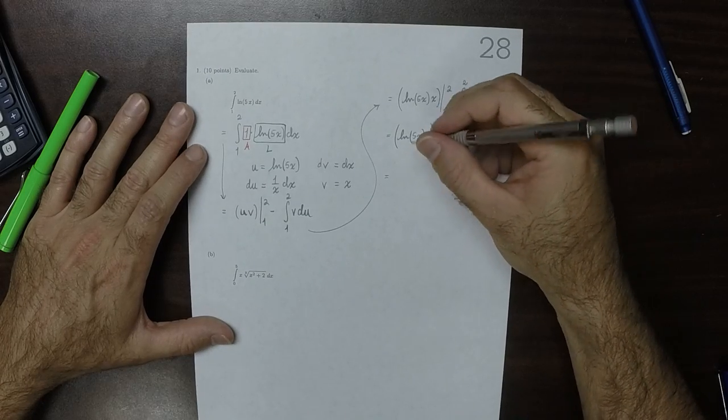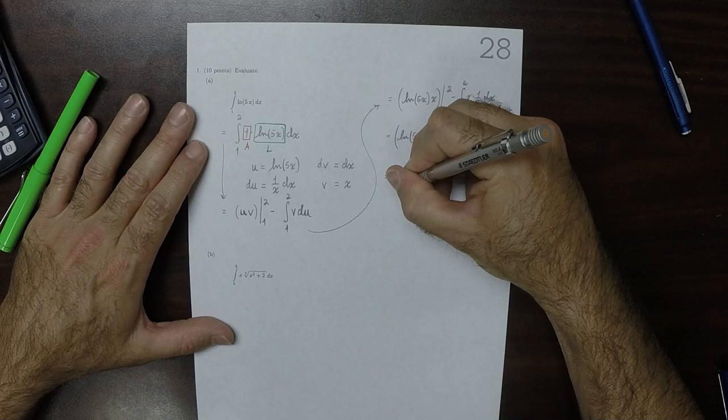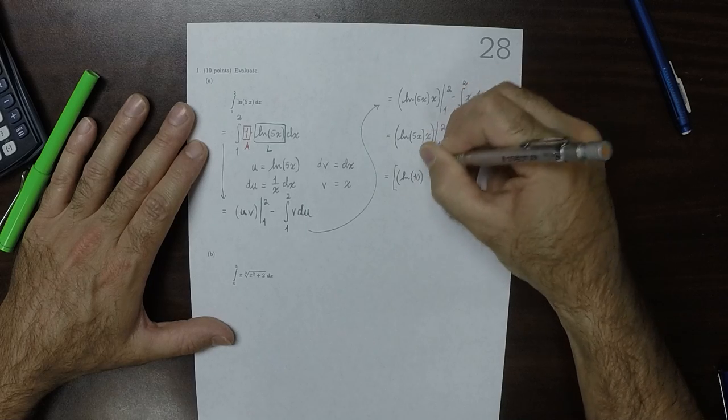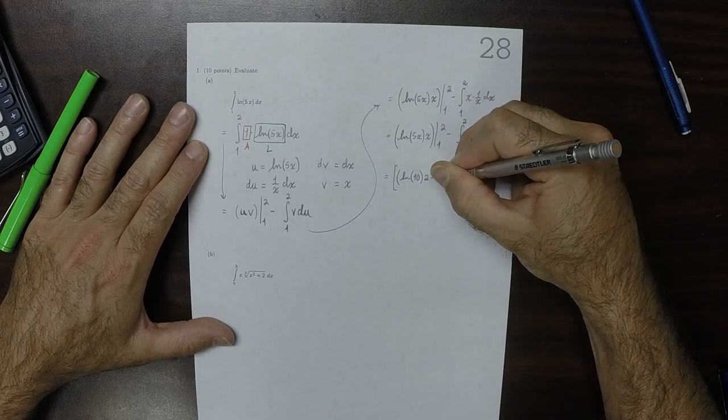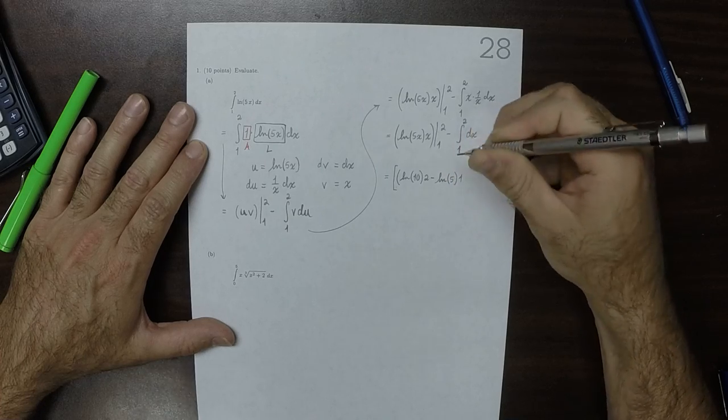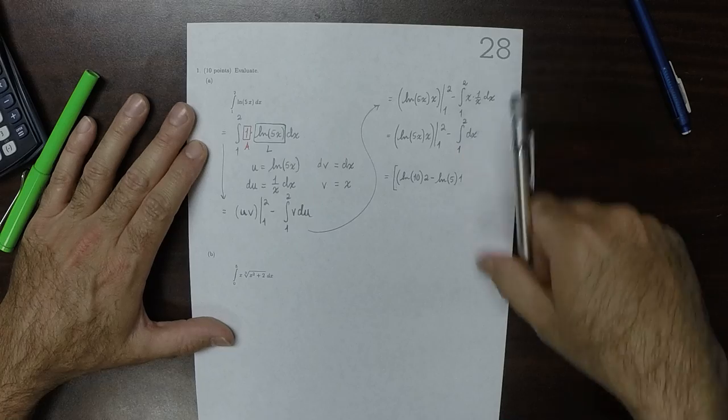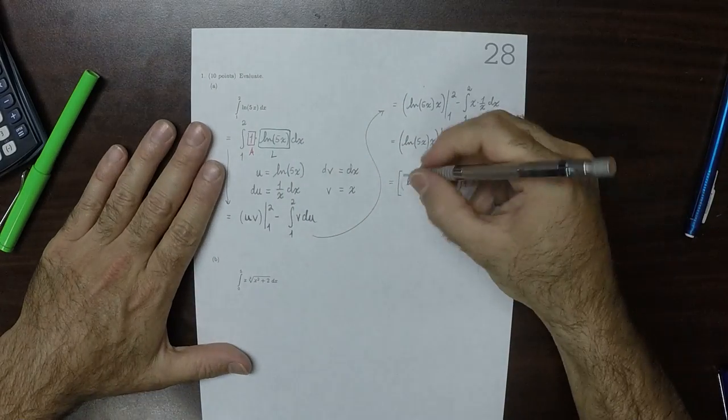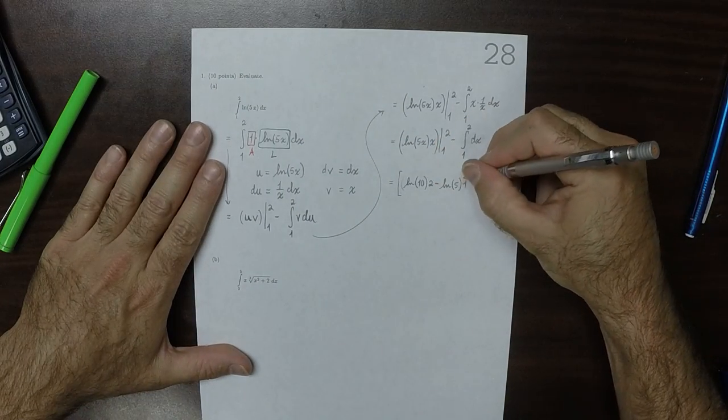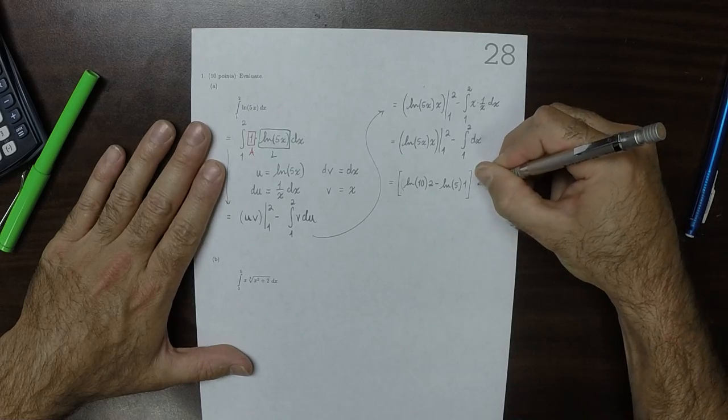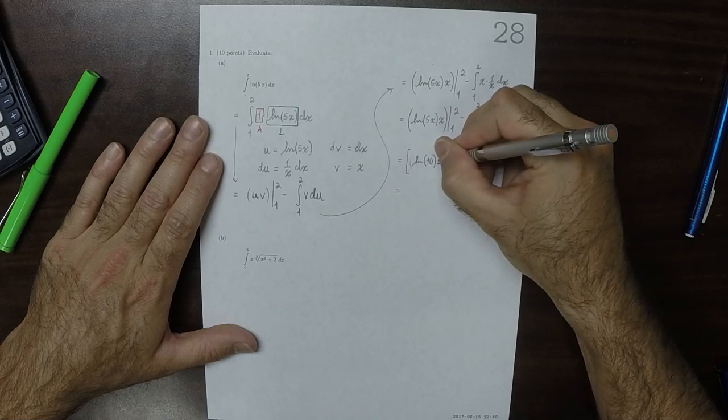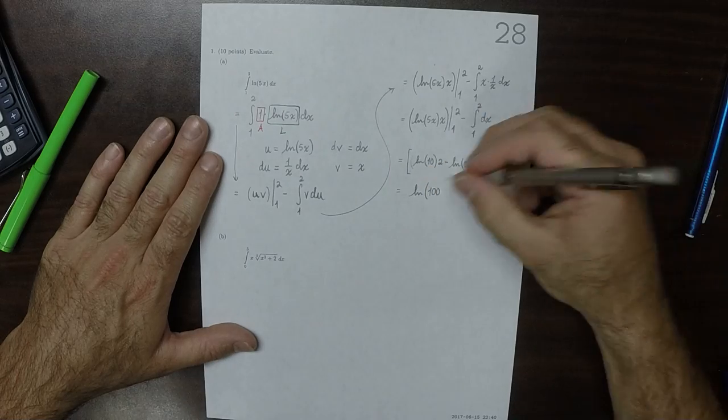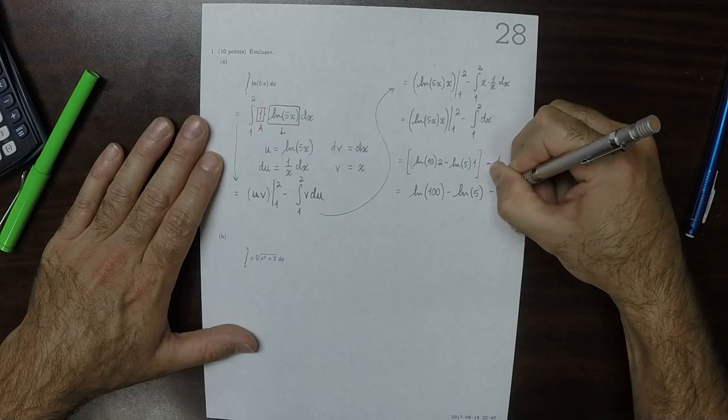And this is, if you plug in 2, that's the logarithm of 10 times 2 minus the logarithm of 5 times 1. And then minus 1, so that can be simplified just a little bit. That 2 can be brought inside, so that'd be the logarithm of 100 minus the logarithm of 5, and then minus 1.